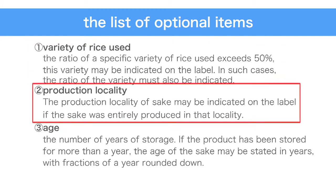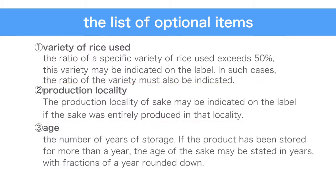The next optional item is production locality. The production locality of sake may be indicated on the label if the sake was entirely produced in that locality. Next is age, which refers to the number of years of storage. If the product has been stored for more than a year, the age of the sake may be stated in years, with fractions of a year rounded down.